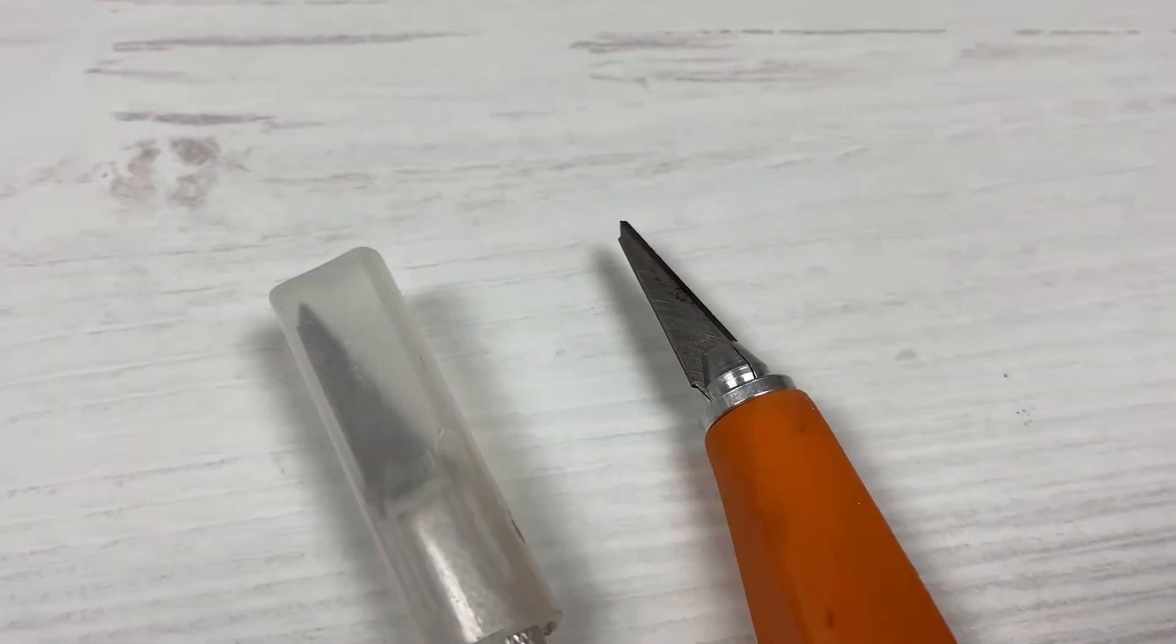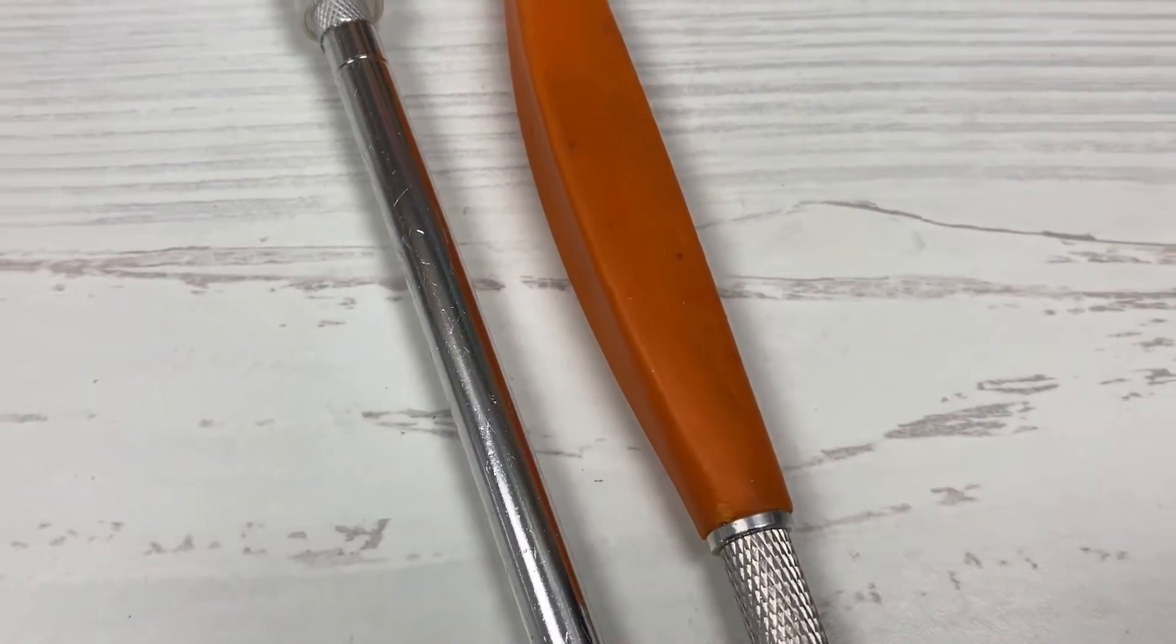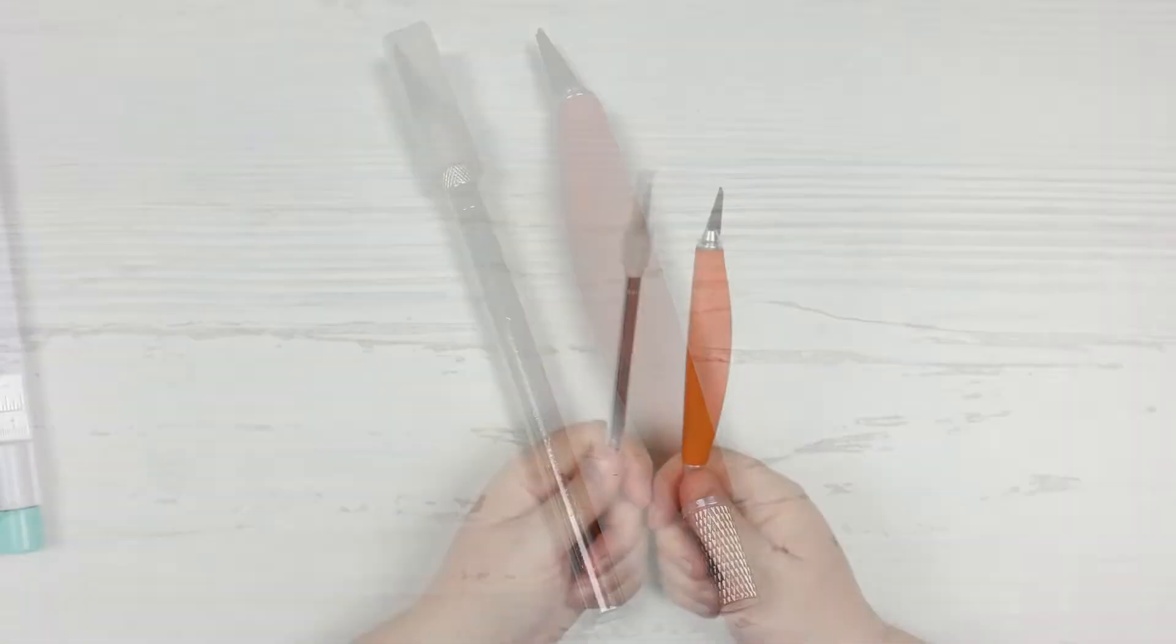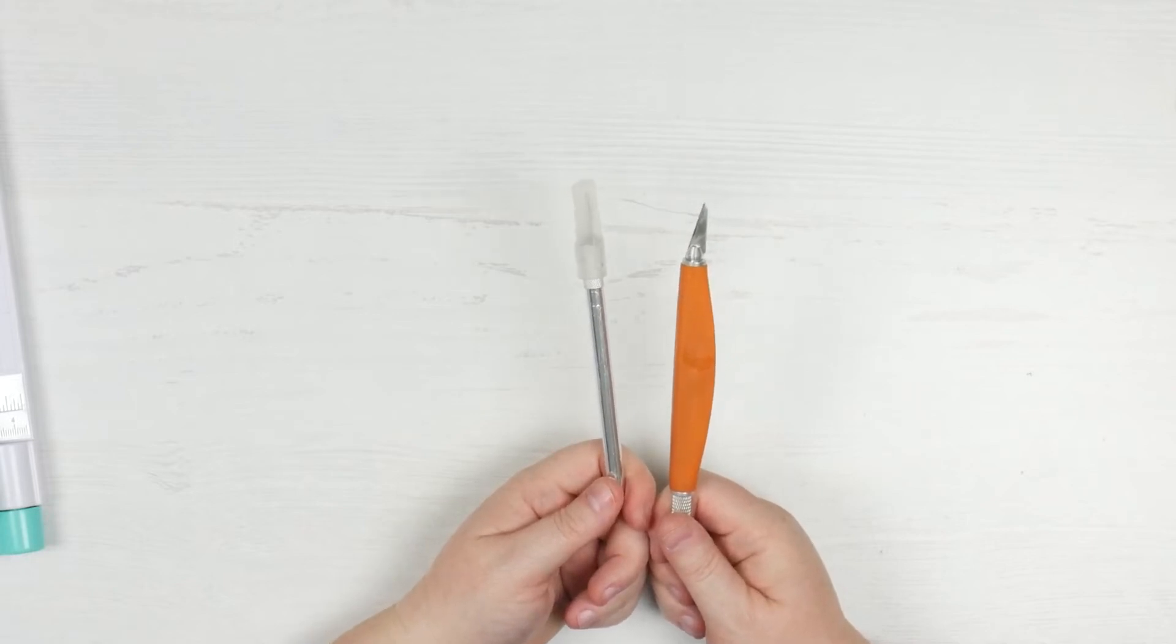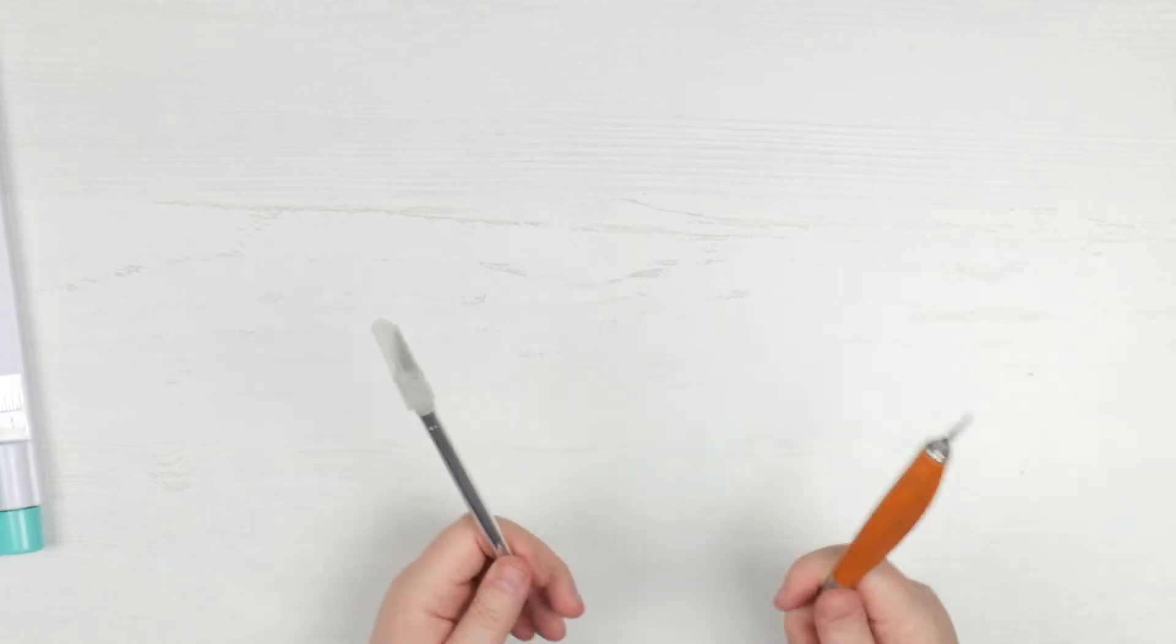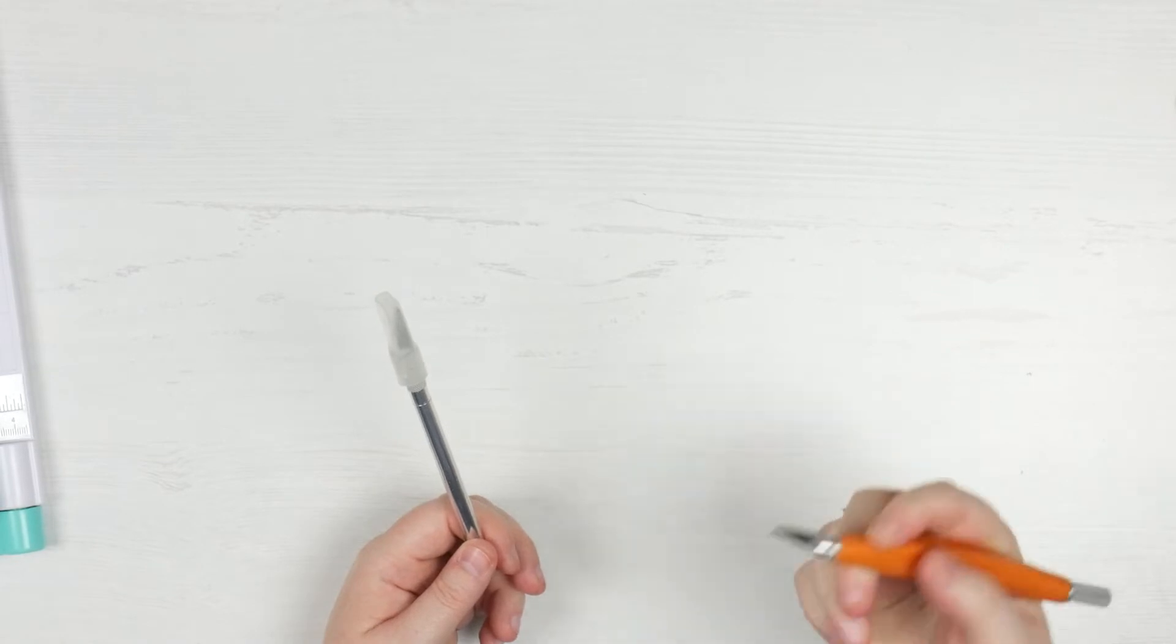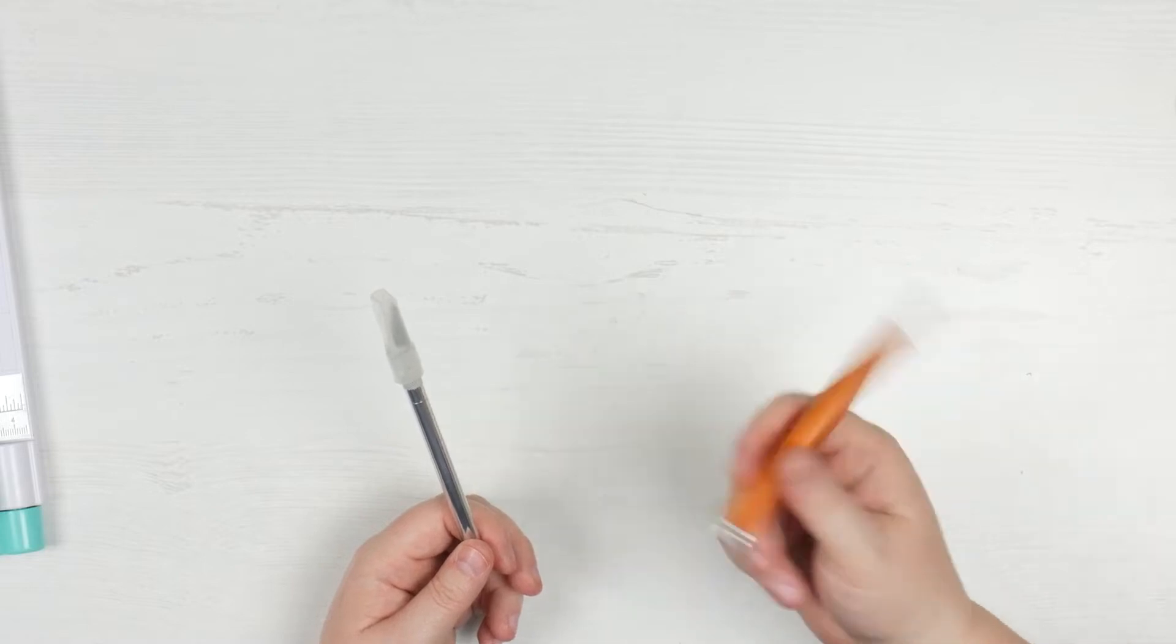The other thing that you sort of need to invest in, you don't have to, but I feel like is a staple in any card makers room is a craft knife. I'm just being really careful with this one because I've lost the top. There are just some things that scissors can't do, some spaces that scissors can't get into.